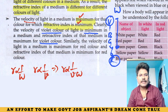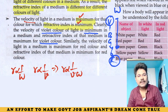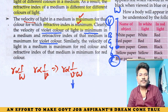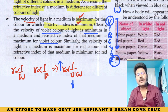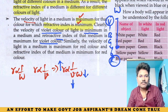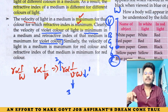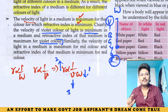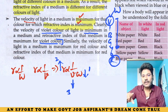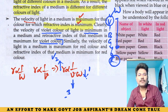Similarly, velocity of light in a medium is maximum for red color, and refractive index of that medium is minimum for red color. Clearly, the velocity of violet color of light is minimum — because the refractive index of that medium is maximum. Violet wavelength with respect to red is lower; refractive index with respect to red is maximum; velocity of violet color is minimum.